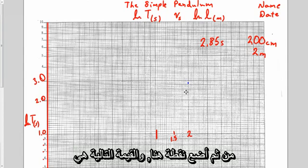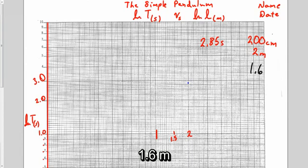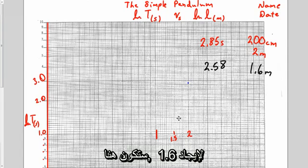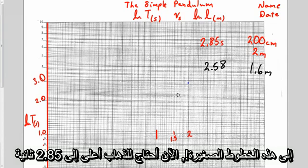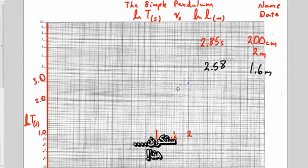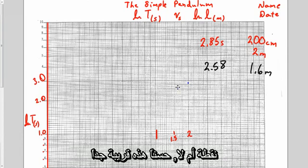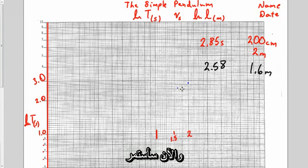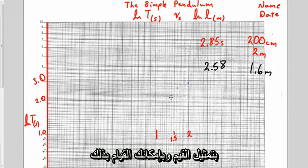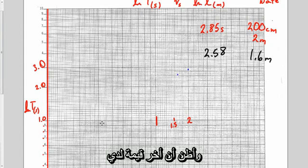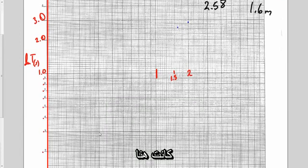My next data point was 1.6 meters and the time was 2.58. So 1.6 meters over, and it'll drive you crazy on these little lines, I need to go up to 2.58 seconds. 2.5 would be right there, pretty close. Now I'm going to continue to fill in the data. My last data point was 20 centimeters and 0.90 seconds.